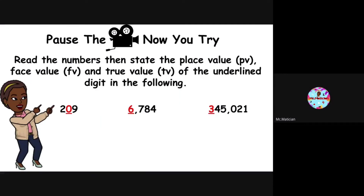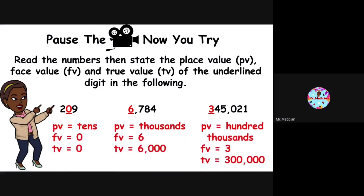Pause the video and now you try. Read the numbers, then state the place value, face value, and true value of the underlined digit in the following. Did you get it correct? Good job! That is all for today, guys. Catch you in our next episode. Until then, see ya!